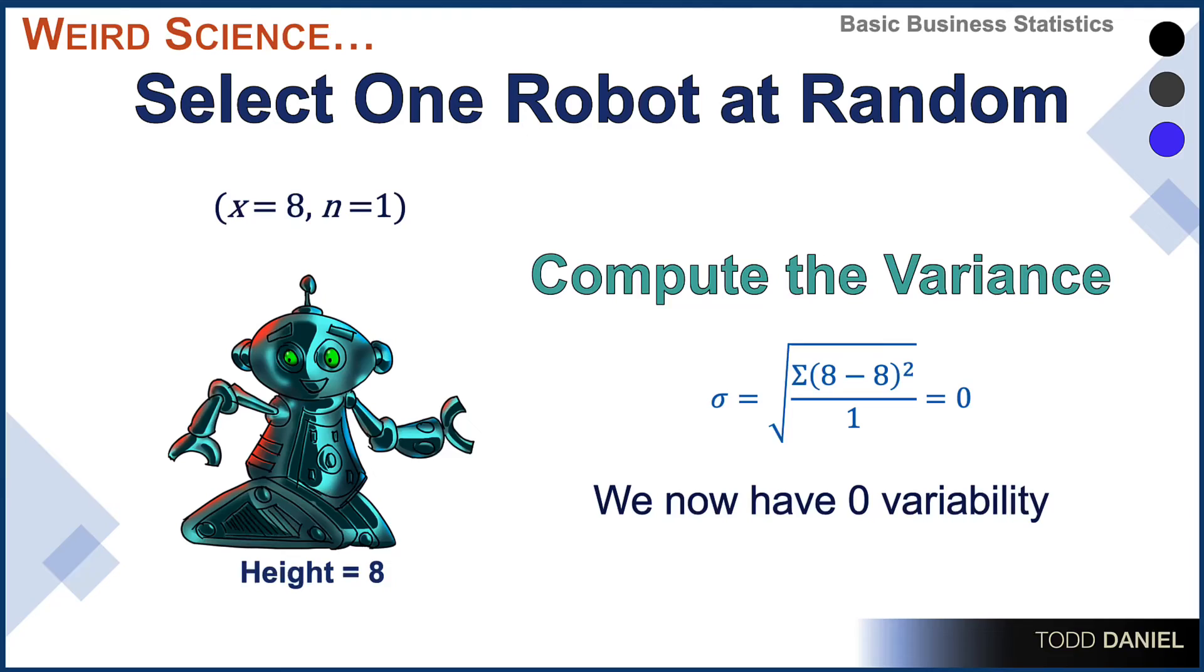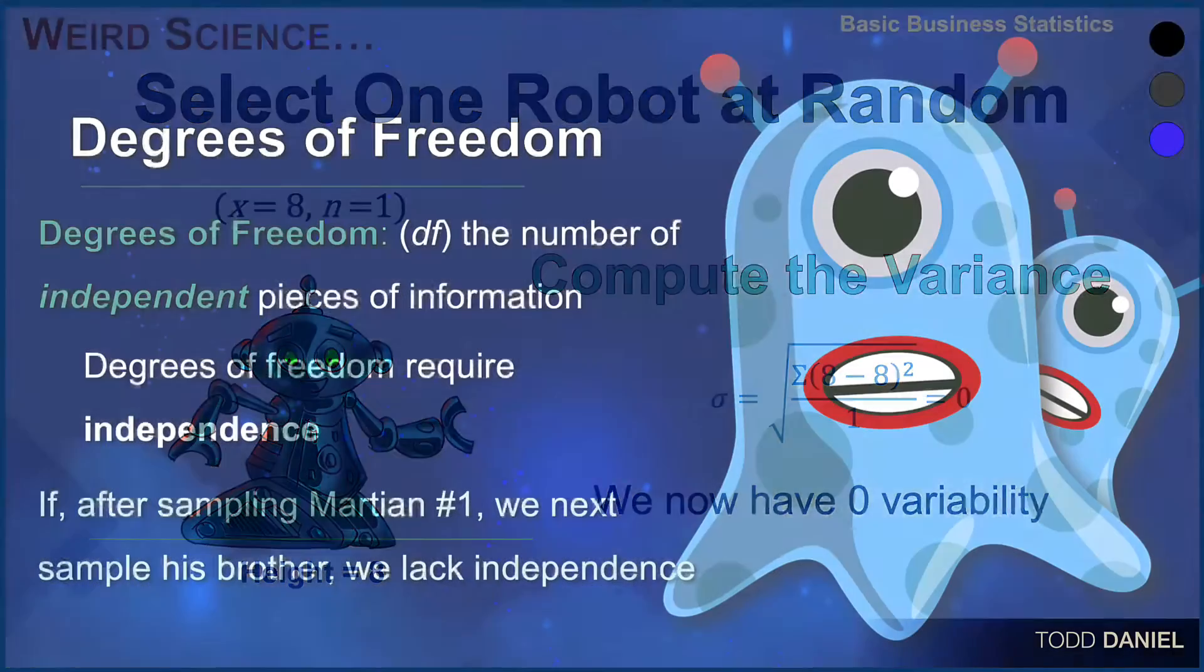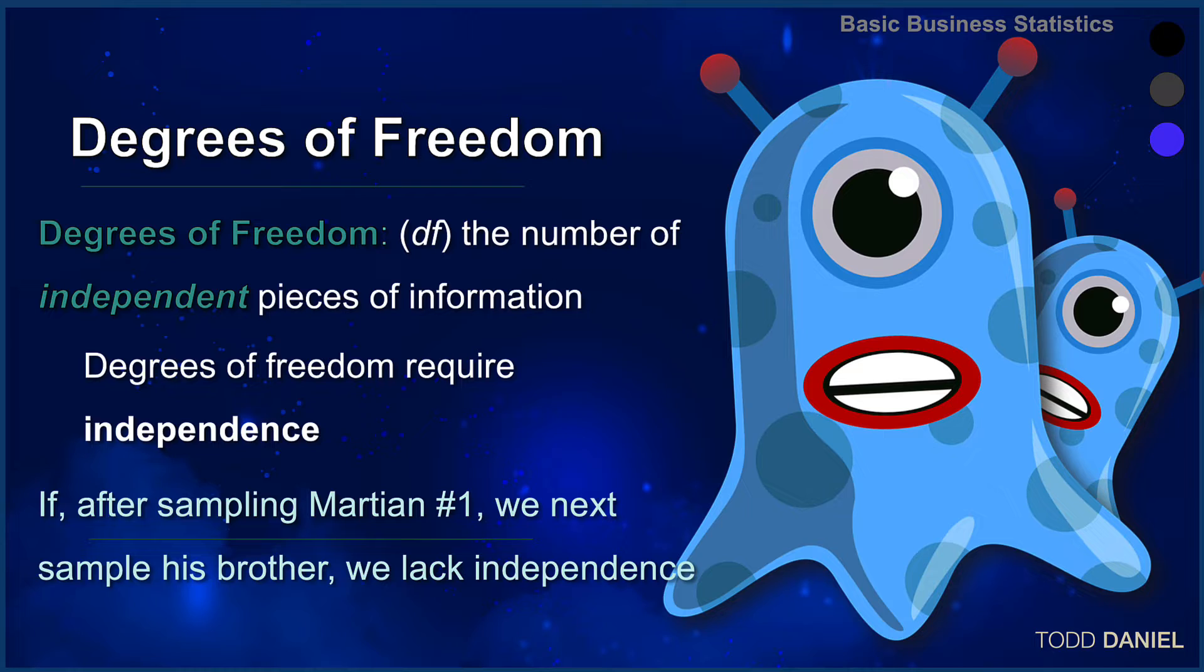And this is where we can begin discussing degrees of freedom to vary. Degrees of freedom is the number of independent pieces of information in our sample. If, after sampling Martian number one, we next sample his brother, then we lack independence. And in the case of our single robot, using non-independent information changes the math that we can do.